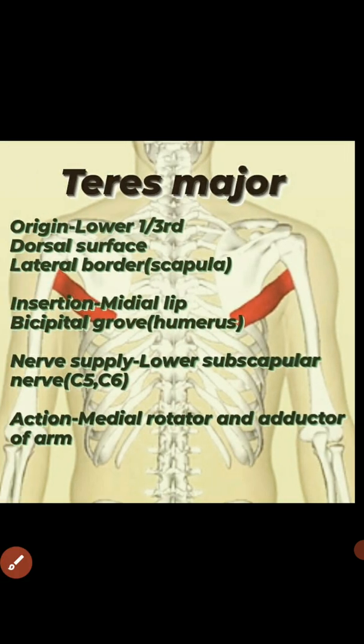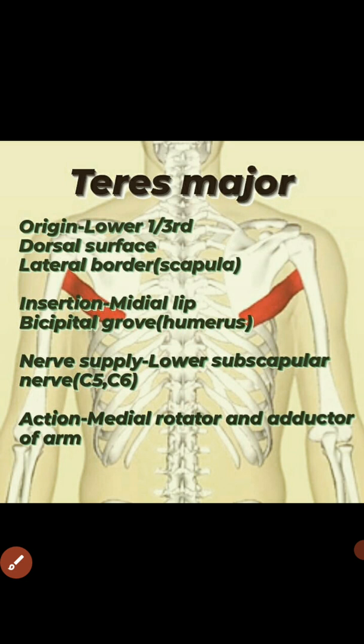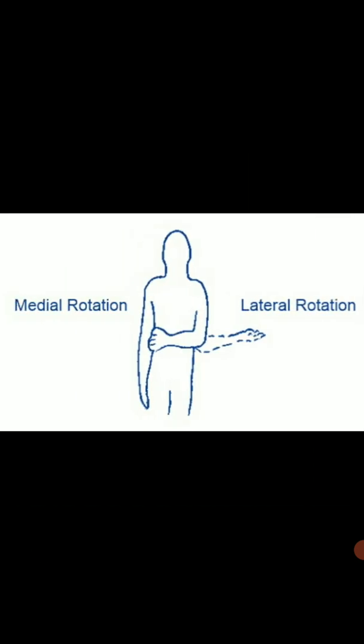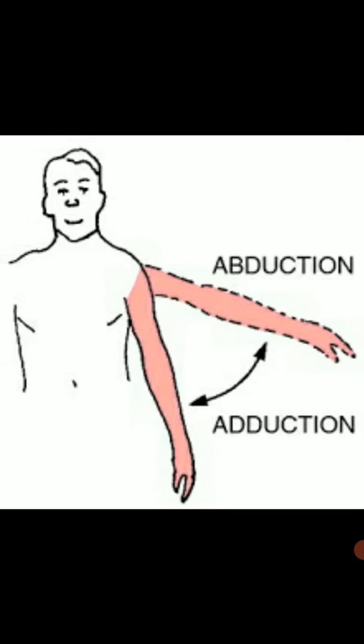The next muscle is teres major muscle. As you can see in the image, origin is from lower one-third of the dorsal surface of the lateral border of scapula. Insertion: medial lip of bicipital groove of humerus. Nerve supply: lower subscapular nerve C5-C6. Action: medial rotator and adductor of arm — adduction meaning towards the body.